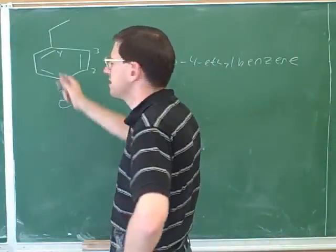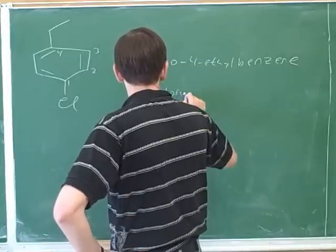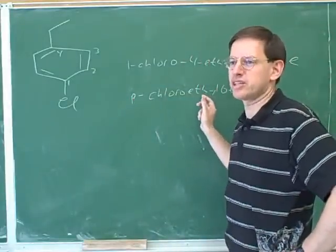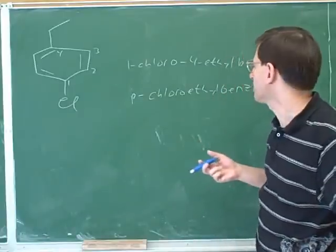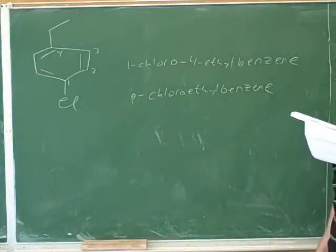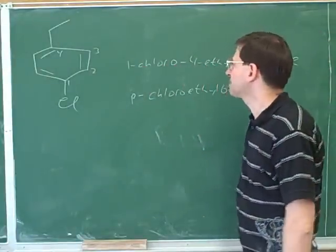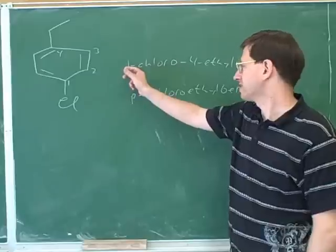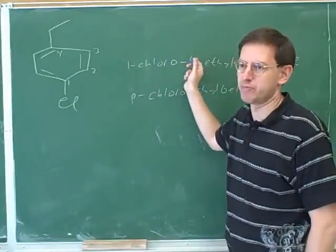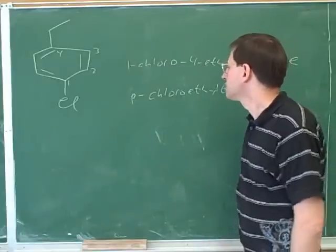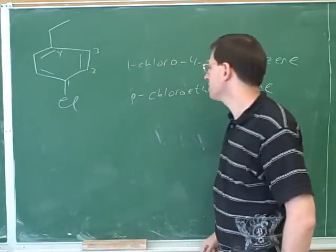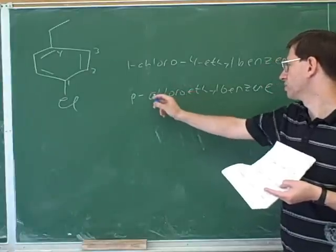Or, since these are in a para position, we could say p-chloroethylbenzene. Notice that once you say p, you don't need any more locators, because p tells you the location of both substituents. When you say p, that's all the locators you need. If we use numbers, we need a separate number for each substituent. You don't really need the 1 here because the reader should be able to figure out that the chlorine is on the number 1 carbon, but it's really best to put in both numbers. One thing we went over: if there's no other way to decide who gets the lower number, you do it by alphabetical order. And if you're using o, m, or p, you don't need any other locators. We're still labeling these in alphabetical order — C before E.